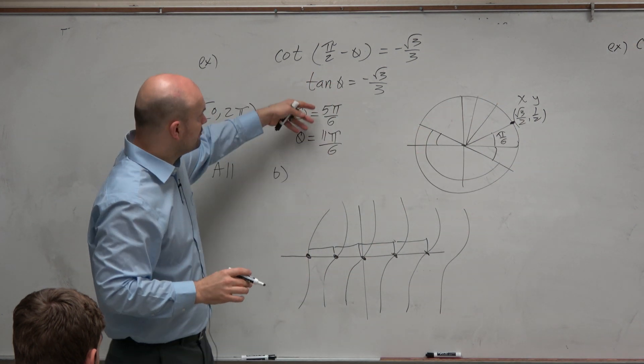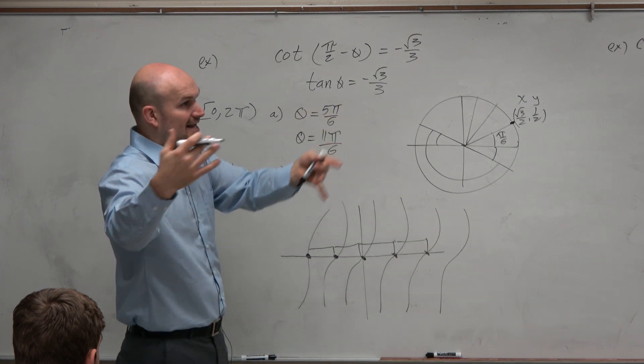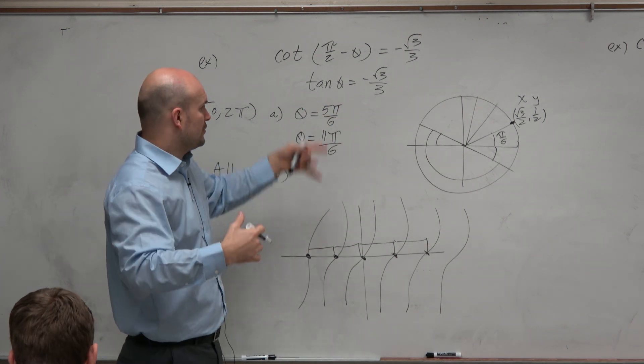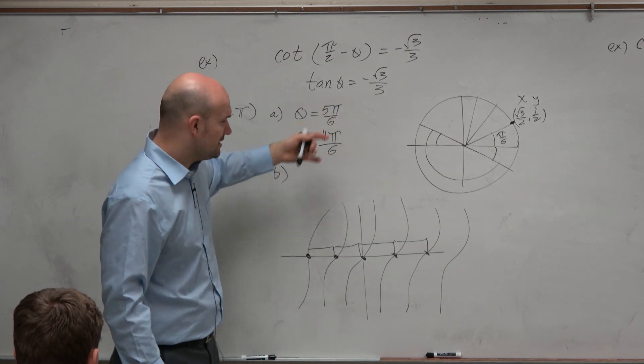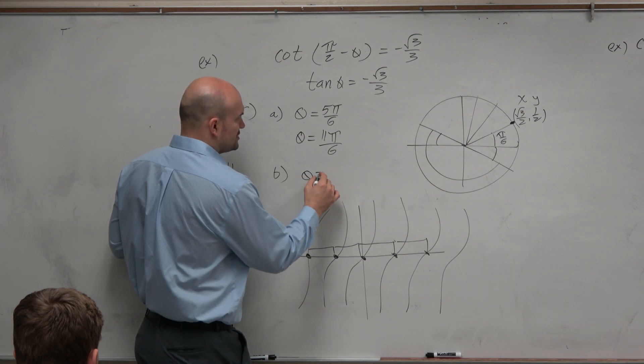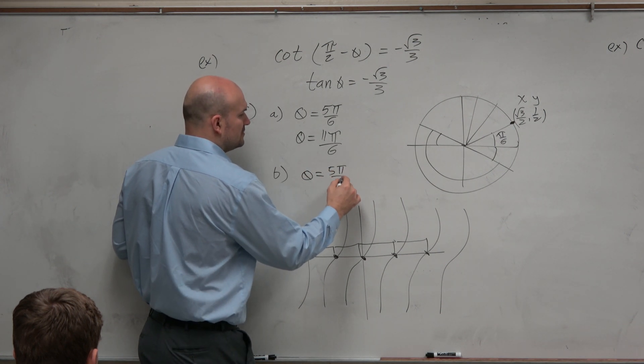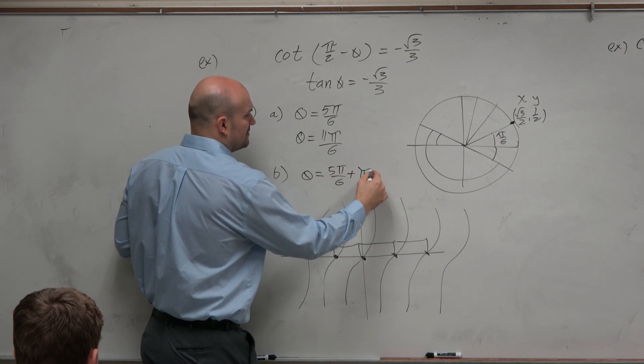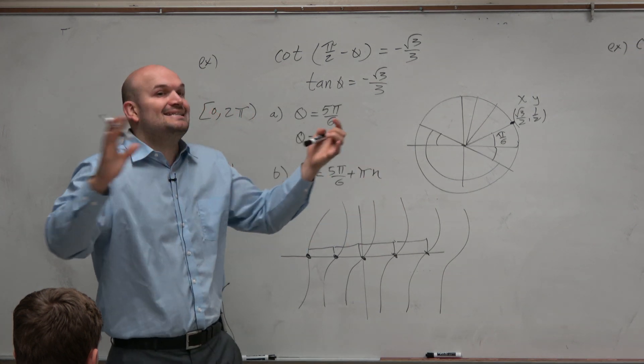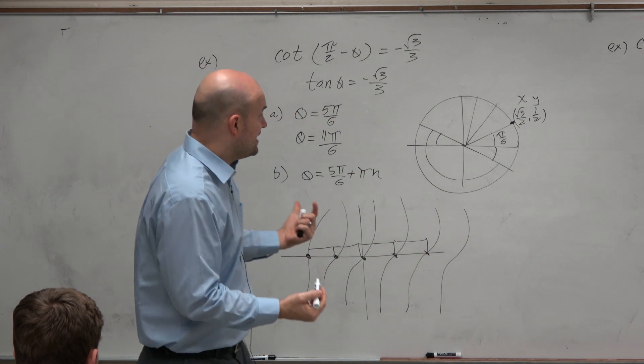So the way to write this is you could write both of these solutions plus πn if you wanted to, or you could write both solutions plus 2πn. But really, the simplified solution is just to write the smallest positive angle plus πn, where n represents an integer, negative or positive.